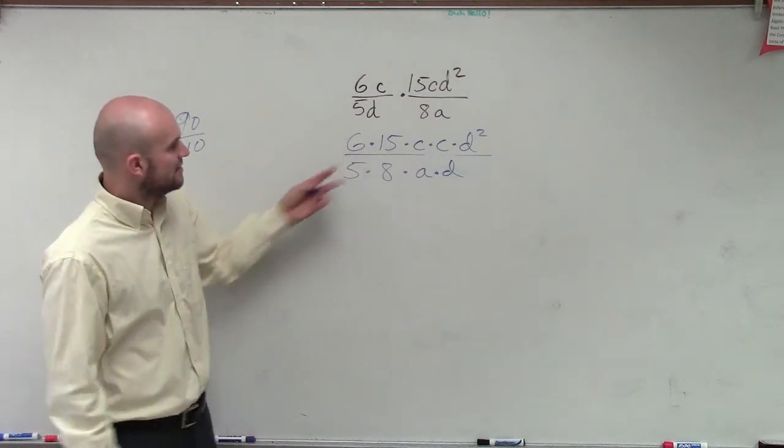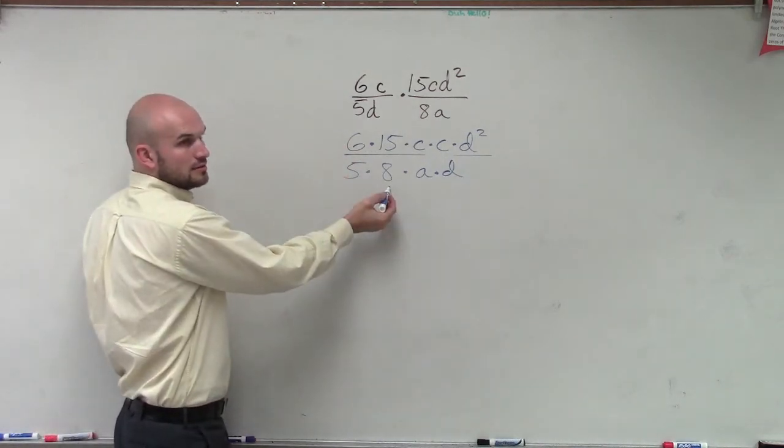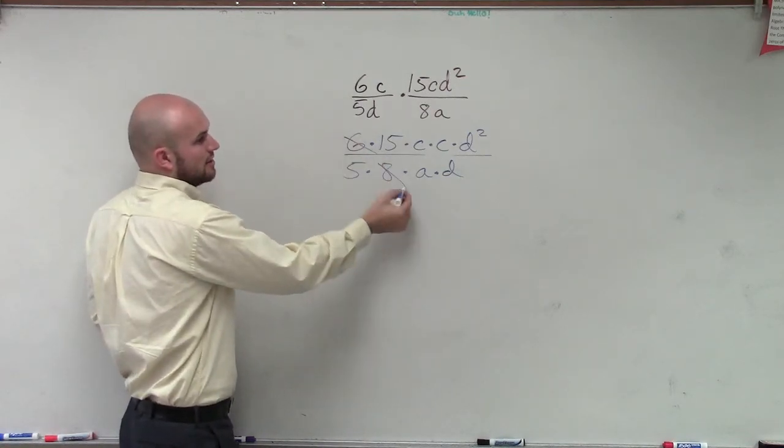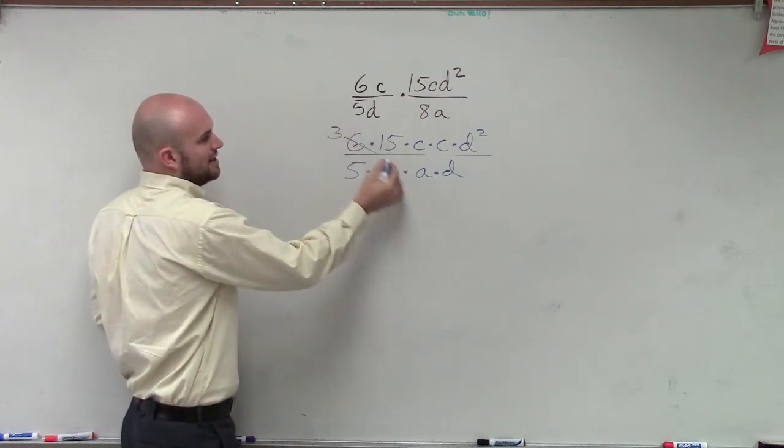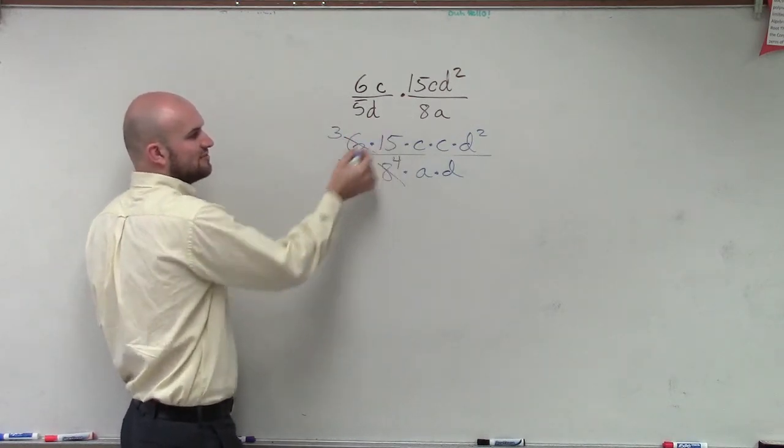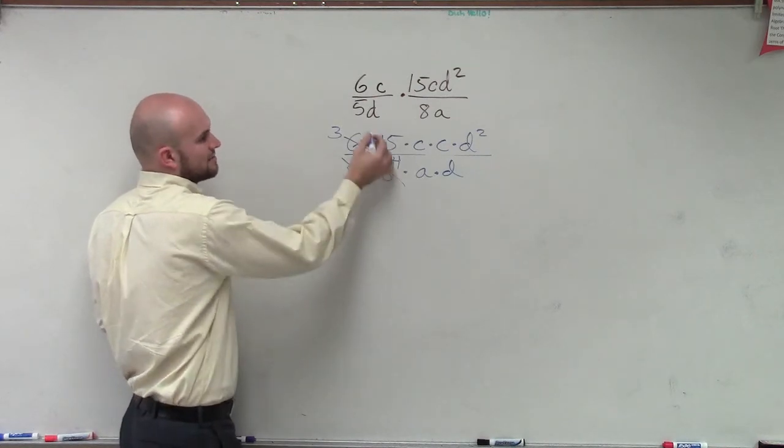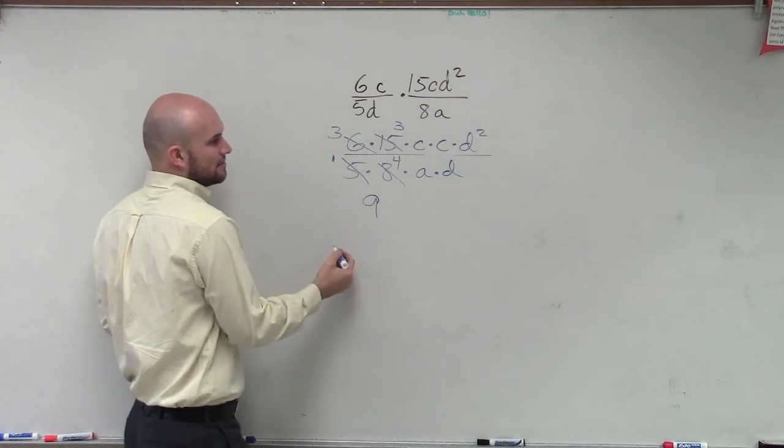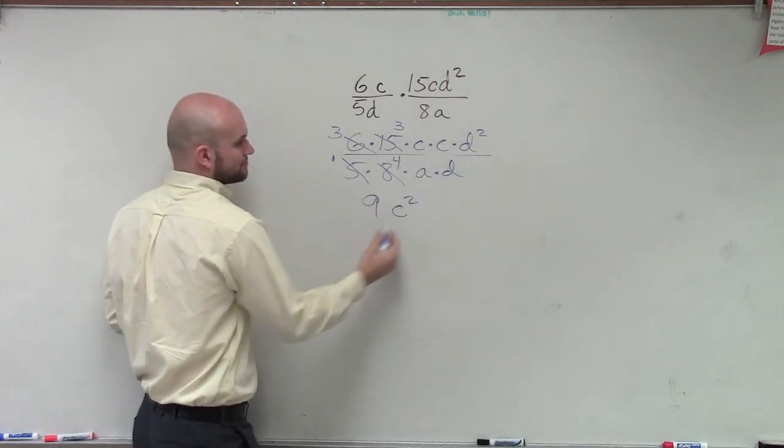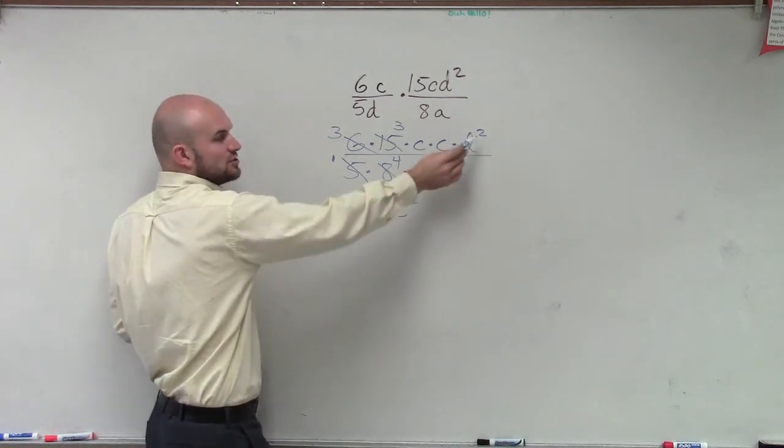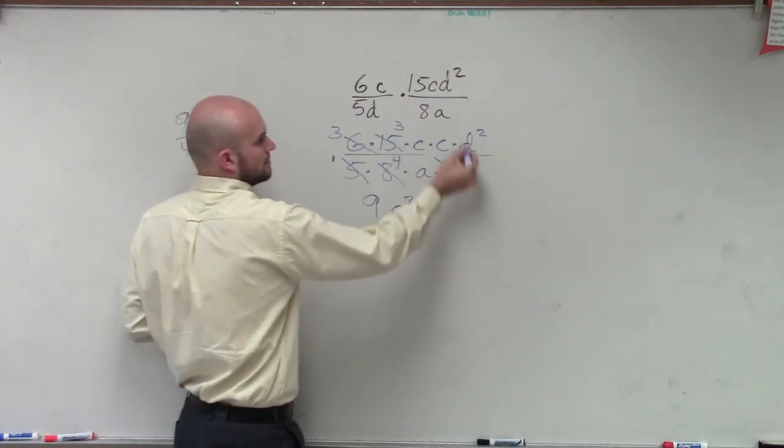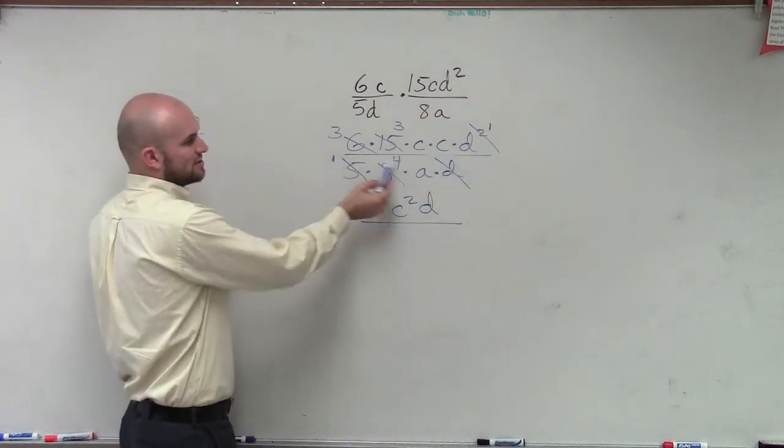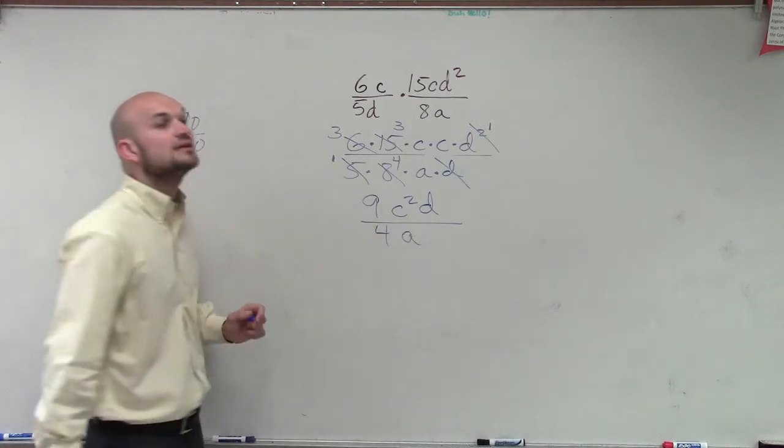But another way you could do it is say, can I simplify the 6 and the 8? Can I reduce 6 and 8? Yeah, I can divide the top and bottom by 2. If I divide the top and bottom by 2, I'm going to be left with 3 over 4. And can I simplify 15 and the 5? Yeah, divide it by 5. Therefore, now I'm going to have 9 on the top. C times C is C squared. And then can I simplify D squared divided by D? Yeah, it's just going to leave me with D. Then on the bottom, I have 4 times 1, which is 4, A.